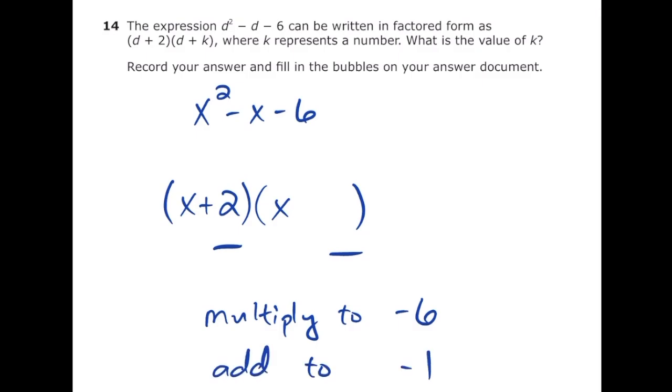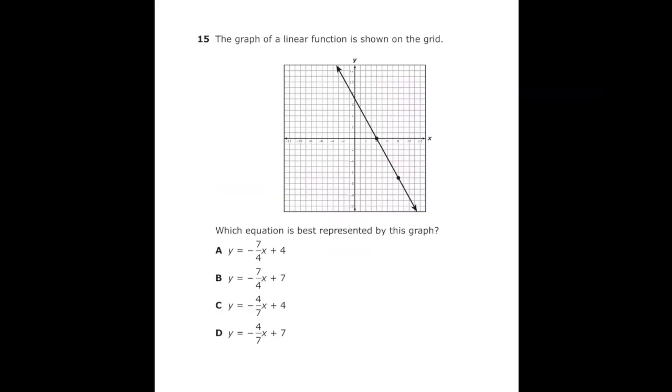So they already give us two. So in order to multiply to negative six, it's going to have to be negative three. And if we check it, negative three and positive two will also add to negative one. So that's going to be correct. So letter k is going to be equal to negative three. This is number 15 from the 2022 Algebra 1 EOC.